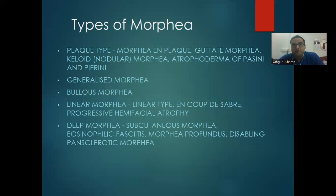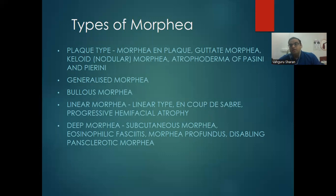Types of morphea: plaque type, guttate morphea, keloid morphea, nodular morphea, eosinophilic fasciitis (Pasini and Pierini), generalized morphea, bullous morphea, and linear morphea. Linear morphea involving the forehead extending to the scalp is called 'en coup de sabre.' When en coup de sabre is associated with progressive hemifacial atrophy, it is called Parry-Romberg syndrome. Deep morphea includes subcutaneous morphea, eosinophilic fasciitis, morphea profunda, disabling pansclerotic morphea.